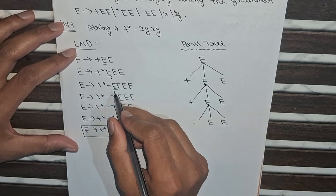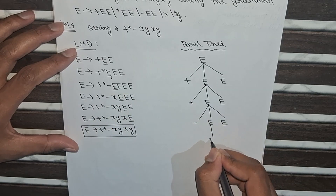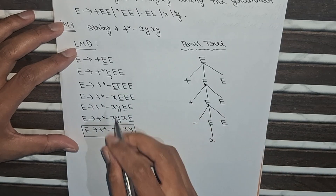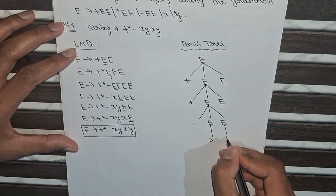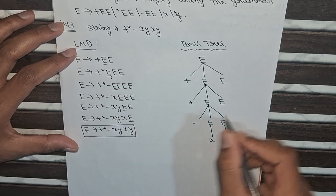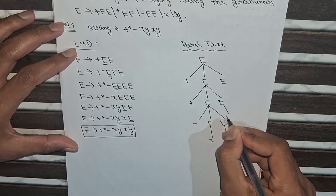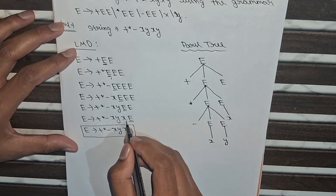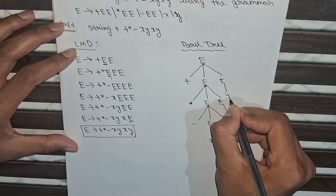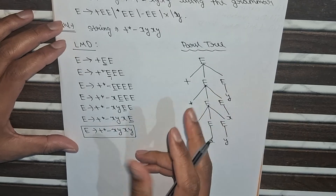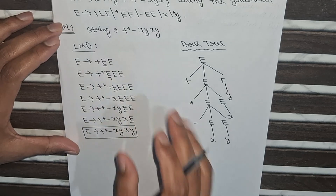After that I put this E as x, and this E as y, and this E as x again, and this E again as y. So this is the parse tree for the LMD for the required string.